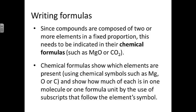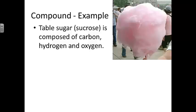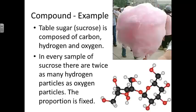Since compounds are composed of two or more elements in a fixed proportion, this needs to be indicated in their chemical formulas. Chemical formulas such as MgO or CO2 show which elements are present using element symbols, and also show how much of each element is present in one unit using subscripts that follow the element, such as the two in CO2 tells you there are two oxygen atoms for every one carbon. Table sugar, also known as sucrose, is composed of carbon, hydrogen, and oxygen. In every sample of sucrose, there are twice as many hydrogen particles as oxygen particles. That proportion is fixed and can be seen in this ball and stick model of one molecule of sucrose.